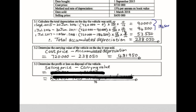Now that I have the carrying value — what this vehicle is worth to the business — I can determine the profit or loss on the sale of assets. I sold it for R450,000; however, it was worth R481,950 to the business. I sold it for less than what it was worth, therefore causing a loss on sale of assets of R31,950. This loss on sale of assets creates an expense account in my books, and this R31,950 will decrease my profits at the end of the year.